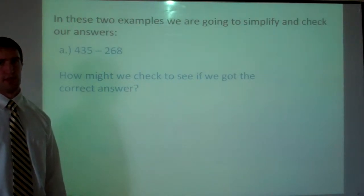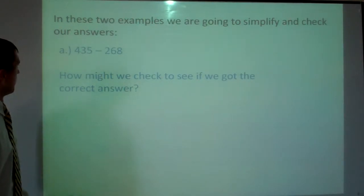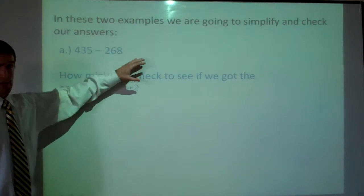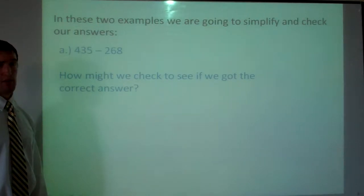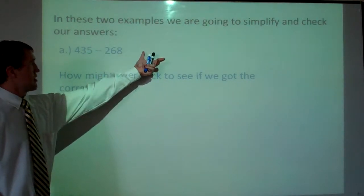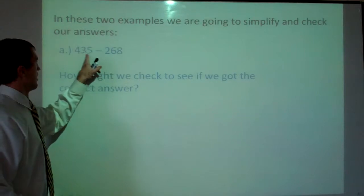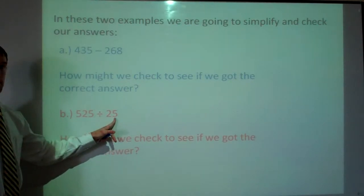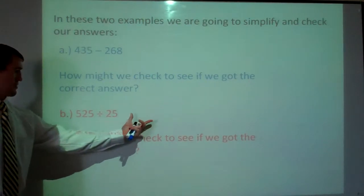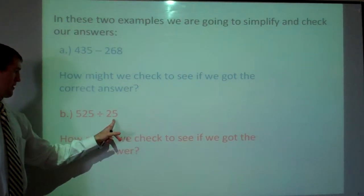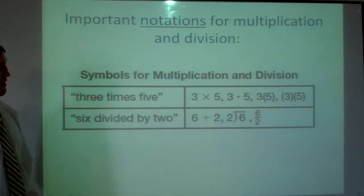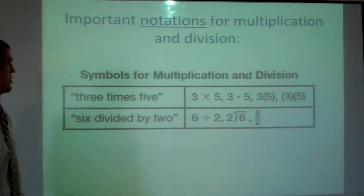There is a way to check your answers. If we subtract 435 and 268, we'll get an answer. To see if we got that right, we could add our answer plus 268 and we should get 435. With division, if we do 525 divided by 25 and get an answer, we take that answer and multiply it by 25 and we should get 525.